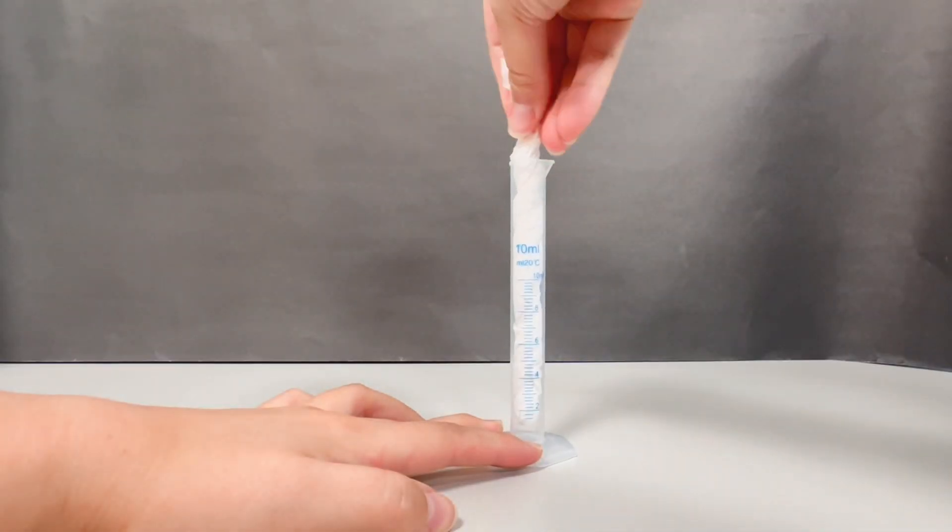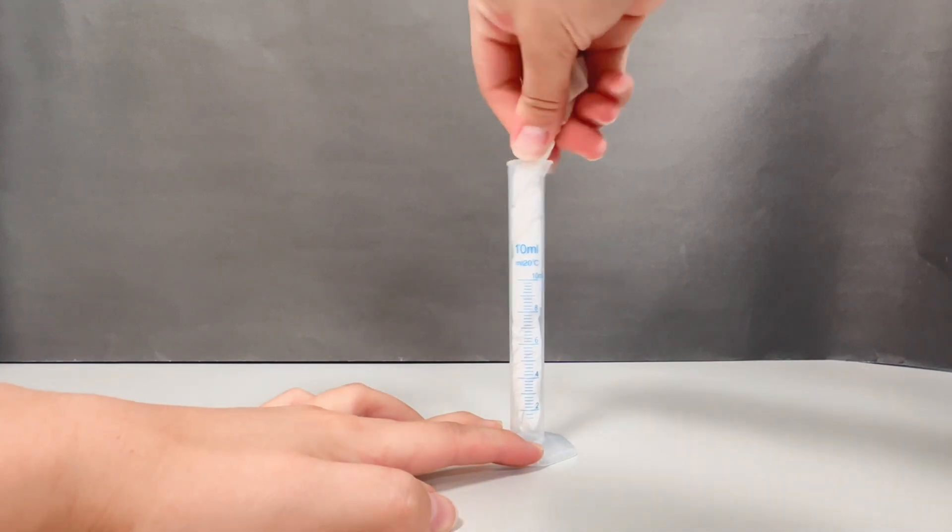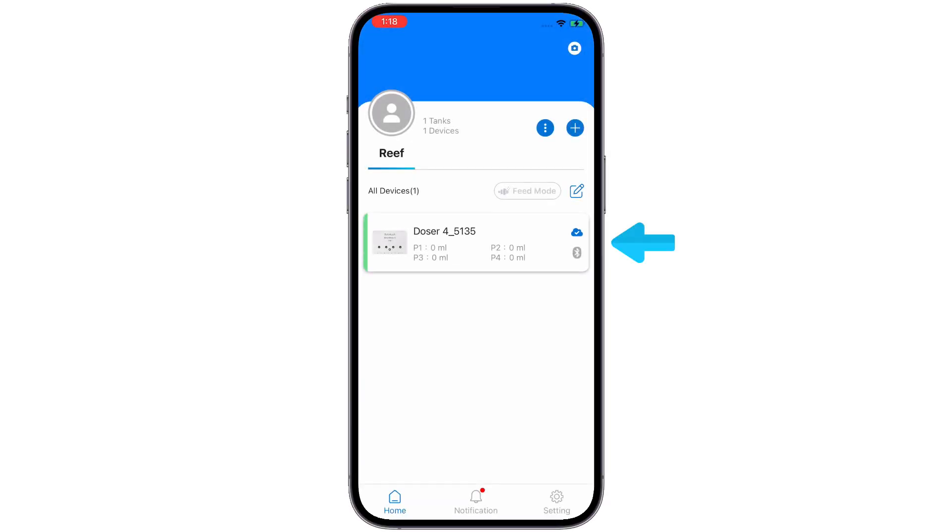First, make sure the cylinder is clean and dry. Then, go to the Aquiline app and select the device on the dashboard.